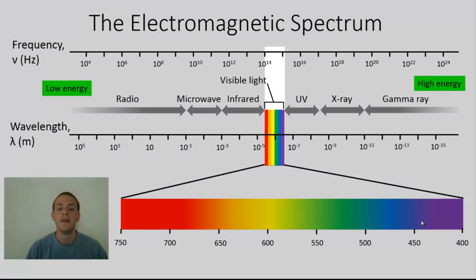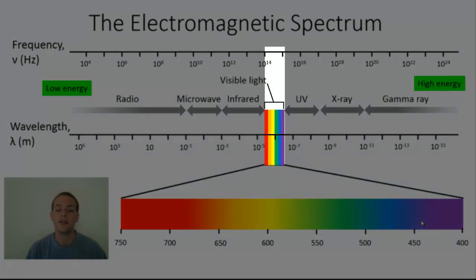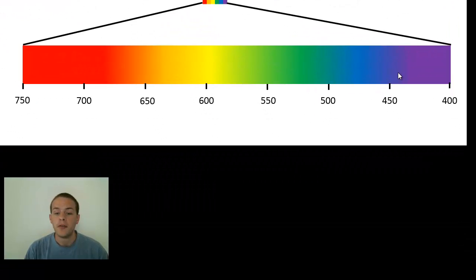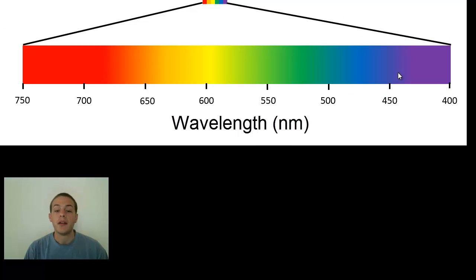After infrared we've got visible light. This little sliver down here is blown up at the bottom of your screen, ranging from 750 nanometers—the scale down here is nanometers—to 400 nanometers. 750 being the red portion of visible light and 400 the violet portion of the visible spectrum.